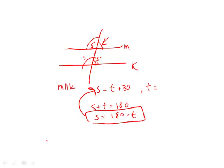Now we can put this in there, and when we do that we get 180 minus t is equal to t plus 30.